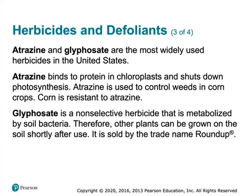Common modern herbicides include atrazine and glyphosate, also known as Roundup. Atrazine binds to the chloroplast and shuts down photosynthesis — corn is resistant to it. Monsanto developed glyphosate and also has Roundup Ready crops that you can spray without killing them. Glyphosate acts like a hormone that makes plant roots grow so hard it kills the weeds, and it's nice because it breaks down into fertilizer and doesn't stick around very long.